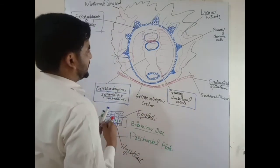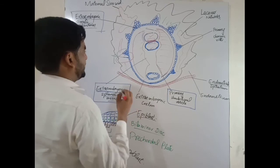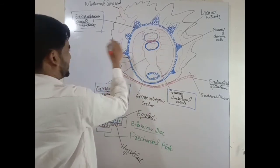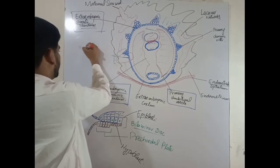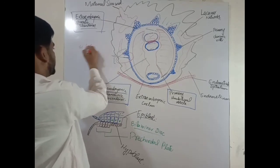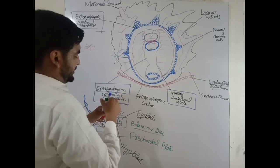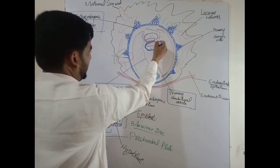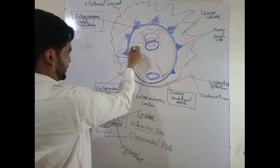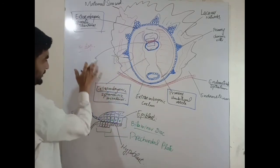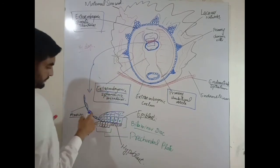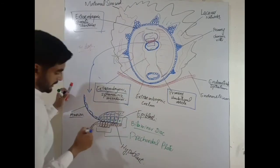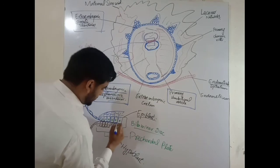That covers the second week of human development. At 14 days, the developing embryo still contains a bilaminar disc. If we take a cut section of this structure, you can see the cut section of the bilaminar disc, which contains two layers.